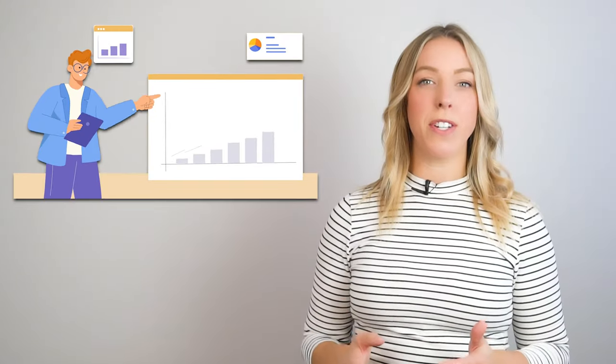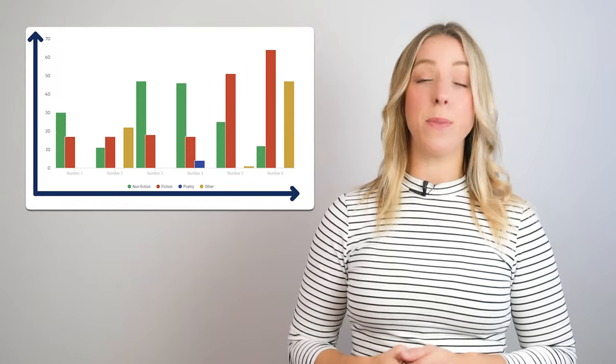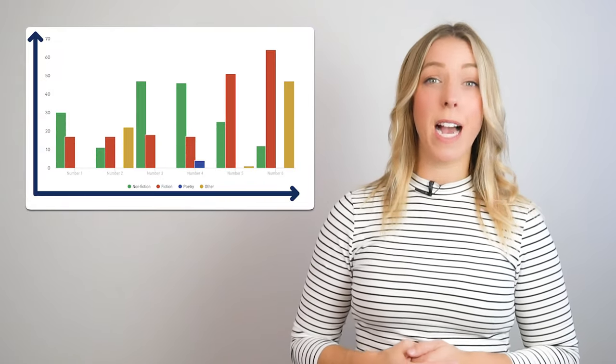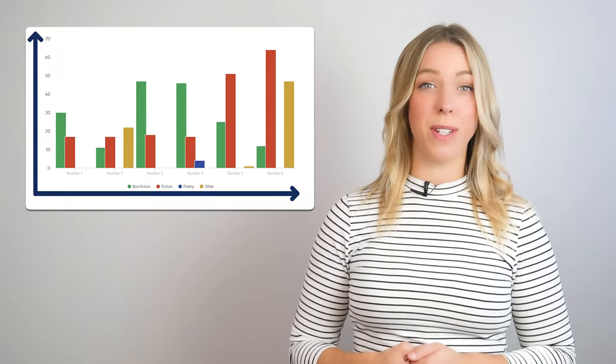A stacked bar chart is a type of bar graph that illustrates the proportional contribution of individual data points in comparison to a total. The height or length of each bar represents how much each group contributes to the total.